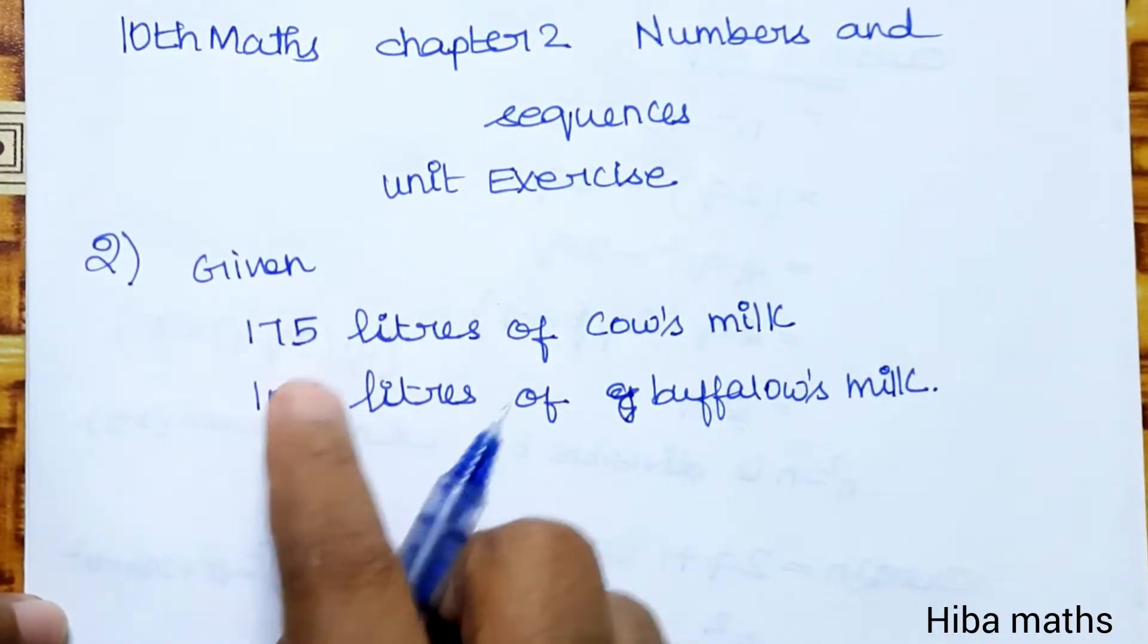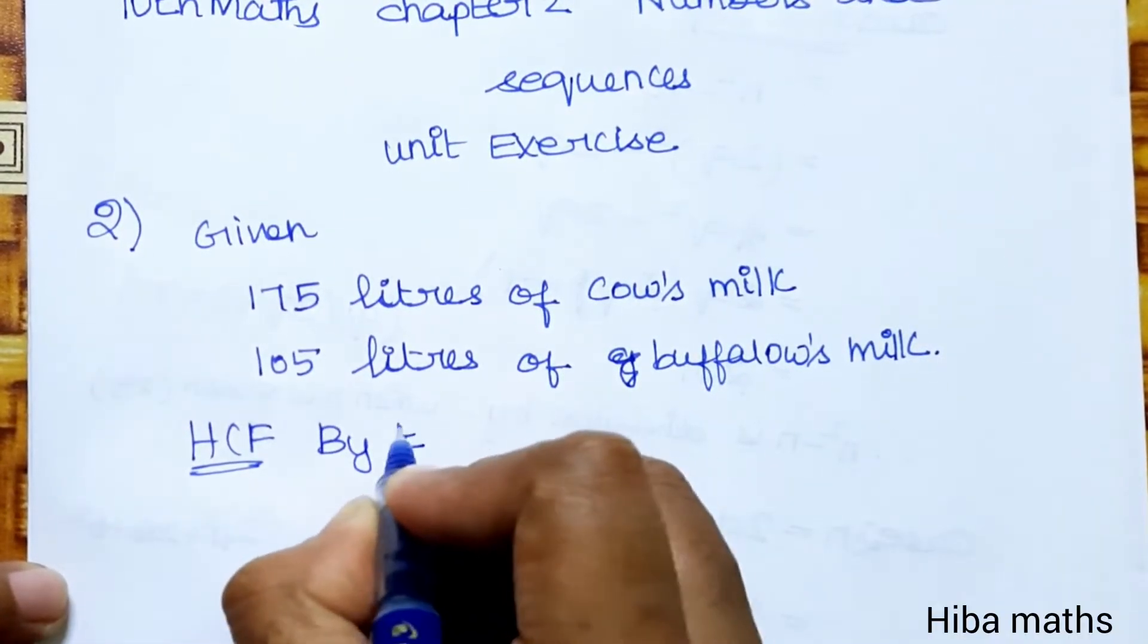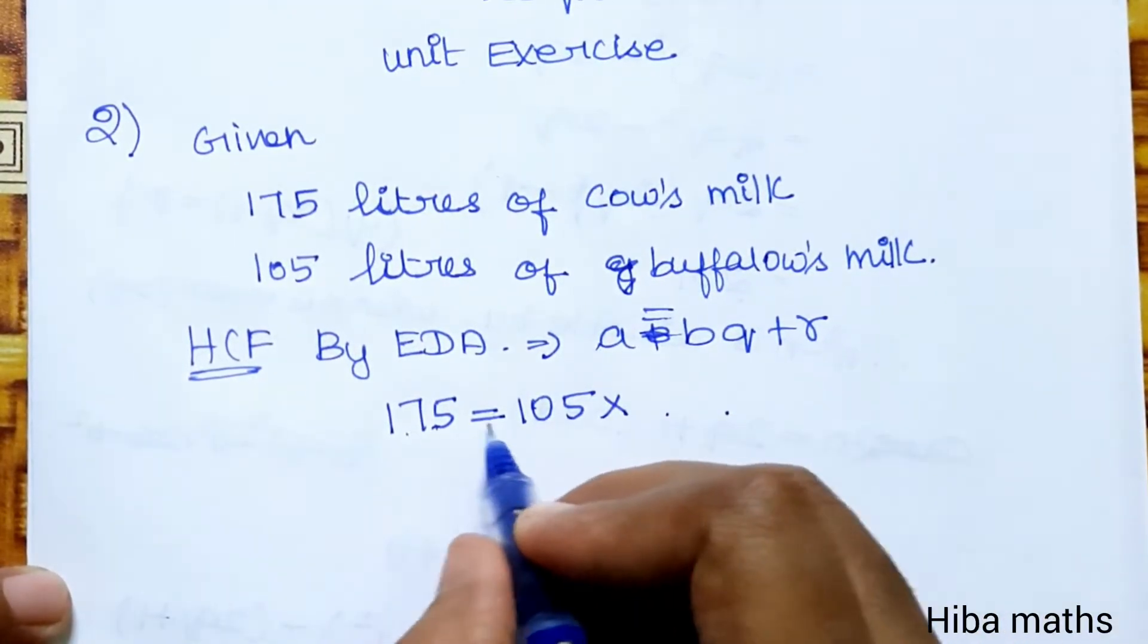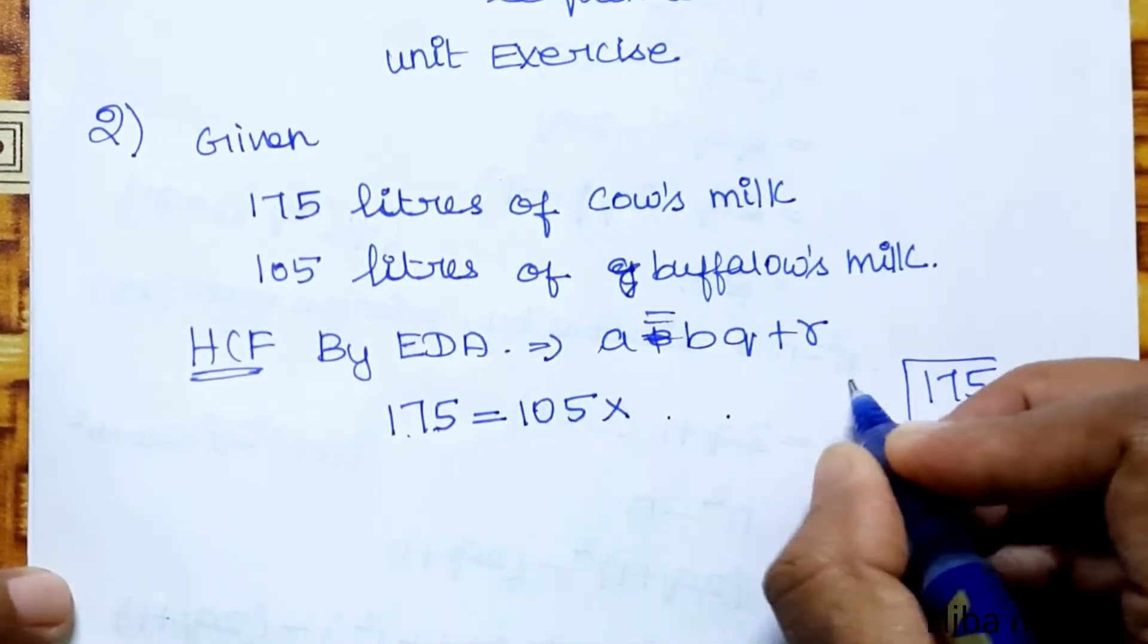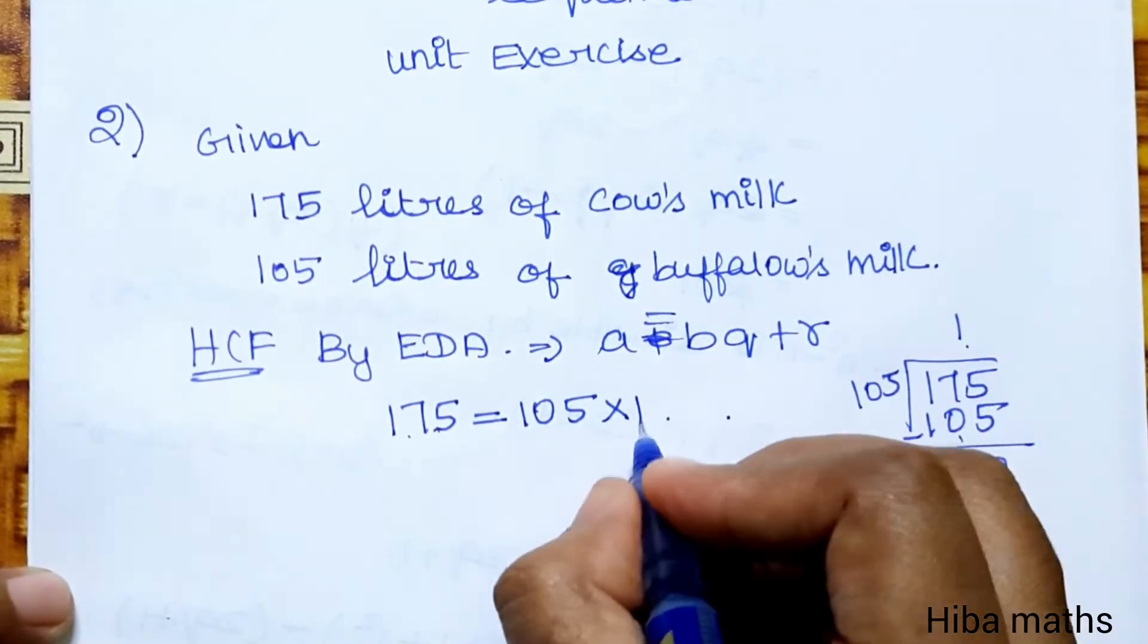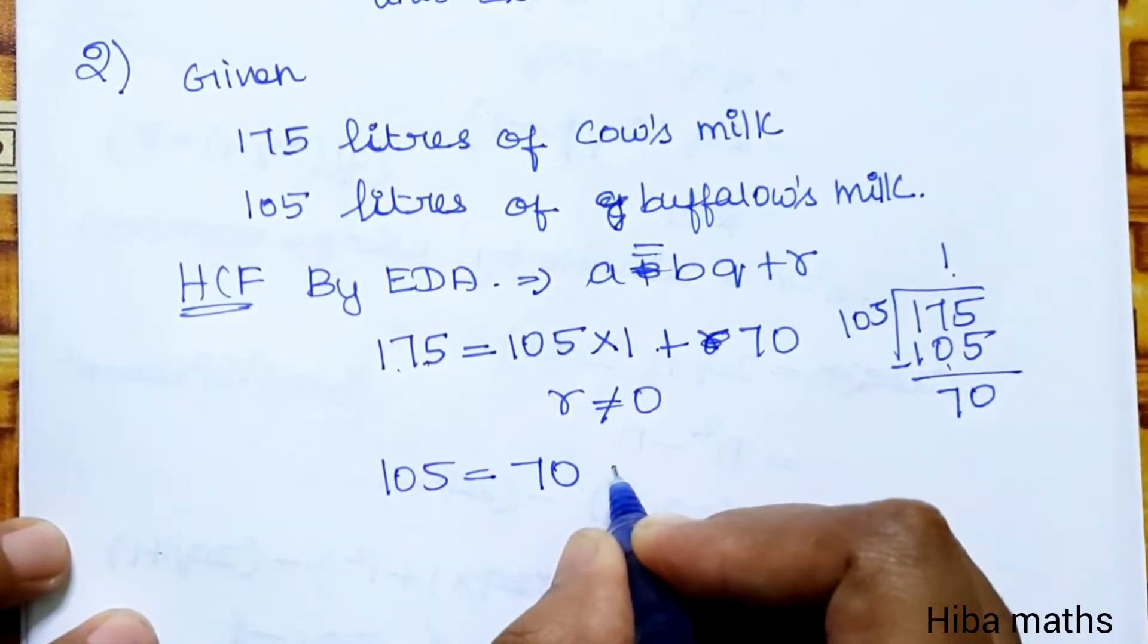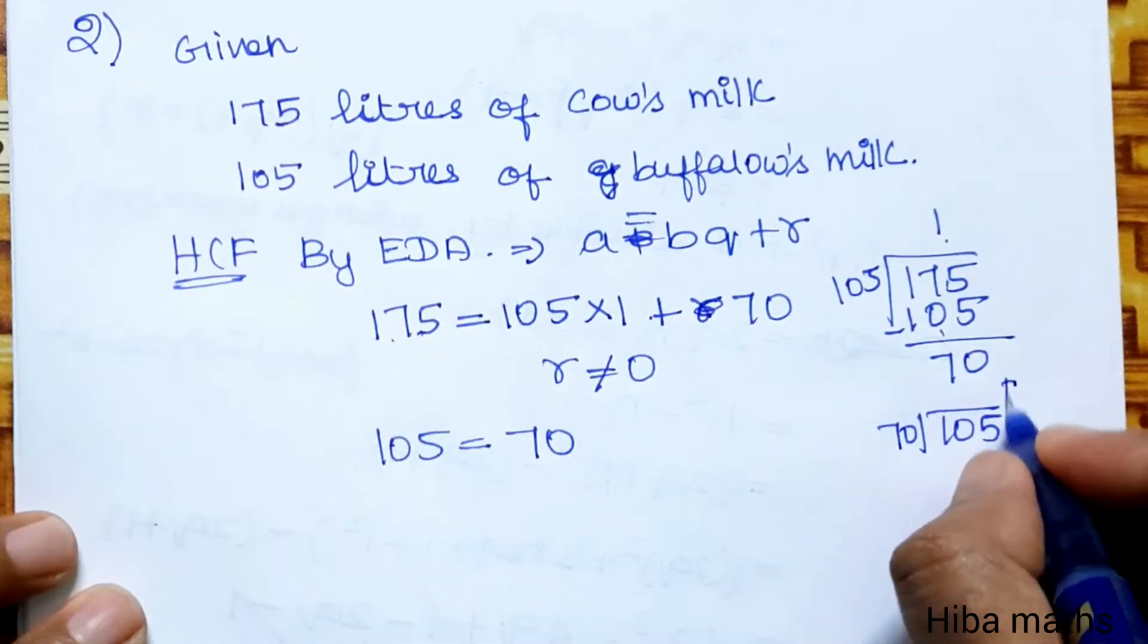Using the Euclidean algorithm: 175 equals 105 times 1 plus 70. So quotient is 1, remainder is 70. R is not equal to 0, so we continue with 105 divided by 70. 105 equals 70 times 1 plus 35. Remainder is 35, not equal to 0.